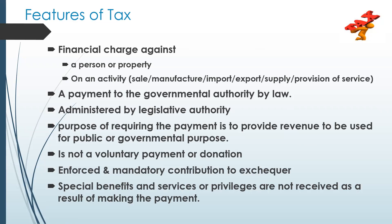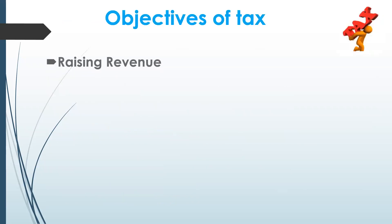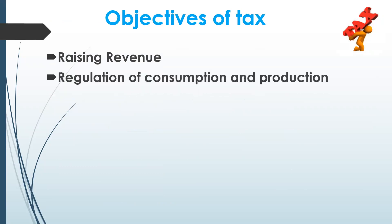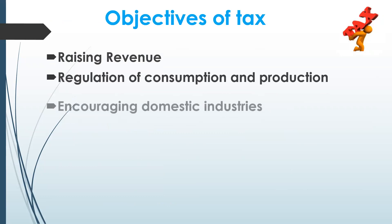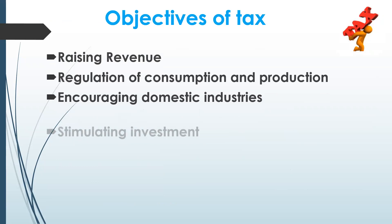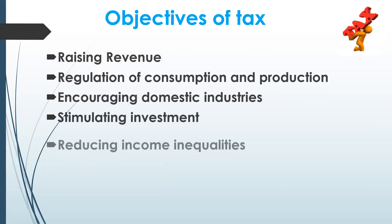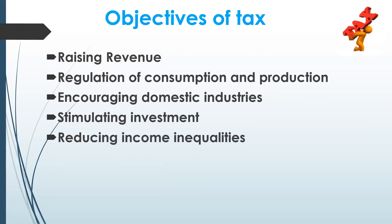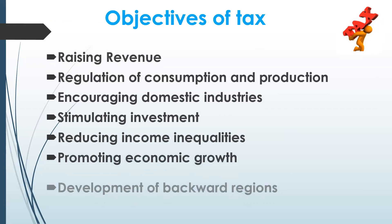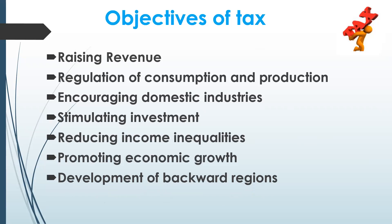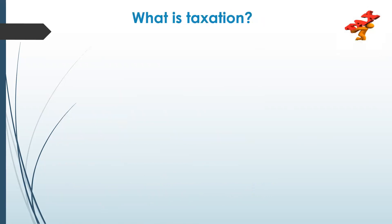One important feature of tax is that it is not a voluntary payment or a donation — it is an enforced and mandatory contribution to the exchequer. Another important feature is there are no special benefits, services, or privileges received as a result of making the payment. Now, moving on to the objectives of tax: the first objective is raising revenues to the government for taking up more economic activities. Tax regulates the consumption and production of economic activities, encourages domestic industries, stimulates investment in the economy, reduces income inequalities, promotes economic growth, and supports development of backward regions. It also ensures price stability.